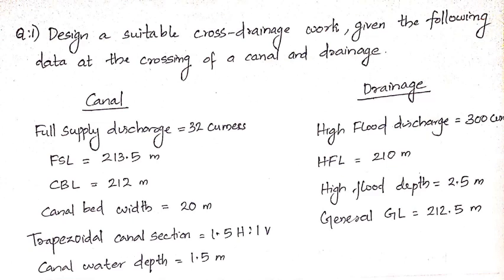The problem states: design a suitable cross drainage work for the given data. Data for canal and drainage is given — full supply discharge, full supply level, canal bed level, canal bed width, trapezoidal channel section, and canal water depth. For the drainage, high flood discharge is given as 300 cumecs, and high flood level and high flood depth are given. You must first identify which cross drainage work is to be provided.